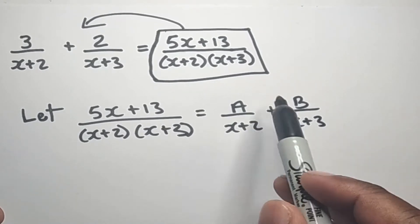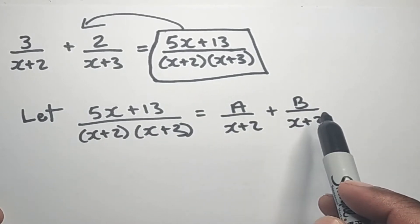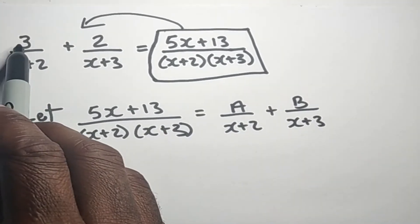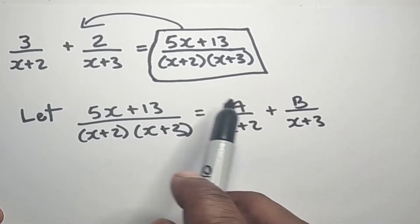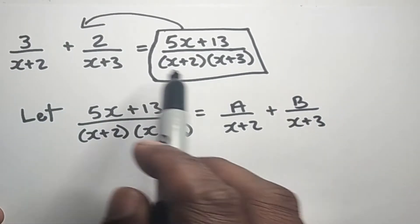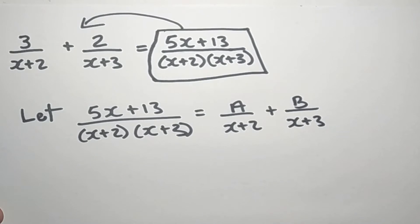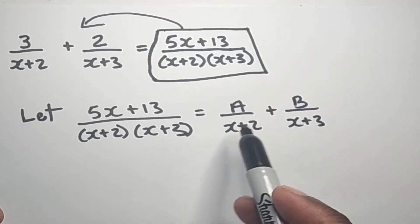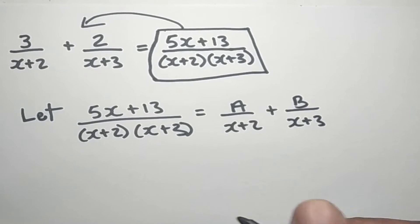Now if we take a look at this, the value for A would come out to be 3. So when we simplify this, we should get our A value to be 3 and our B value to be 2. So let's look at how we approach this. Every move that we make is pretty much to obtain the value of A and B.